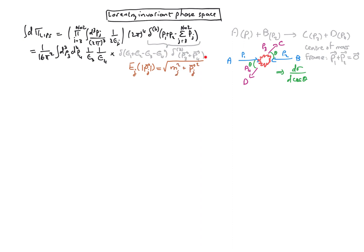We can use the delta function to kill the integral over dp4 and then replace p4 by minus p3.